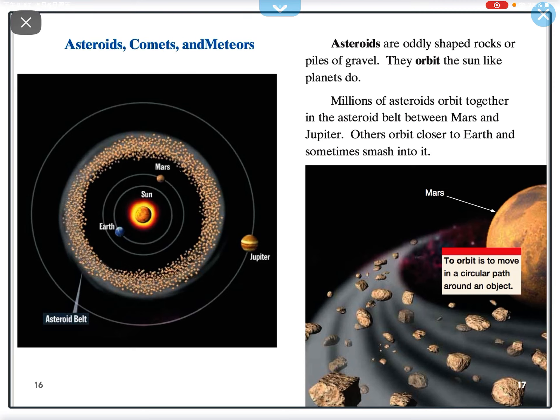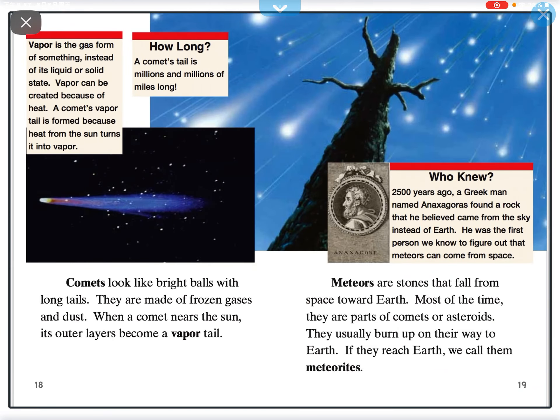Asteroids are oddly shaped rocks or piles of gravel. They orbit the sun like planets do. Millions of asteroids orbit together in the asteroid belt between Mars and Jupiter. Others orbit closer to Earth and sometimes smash into it.